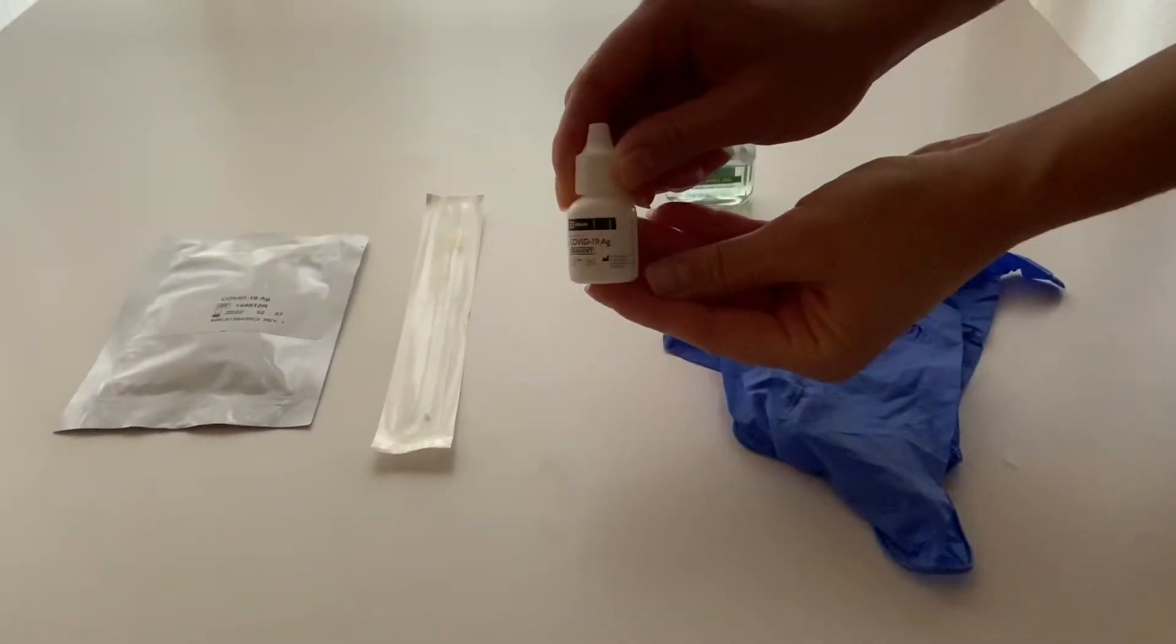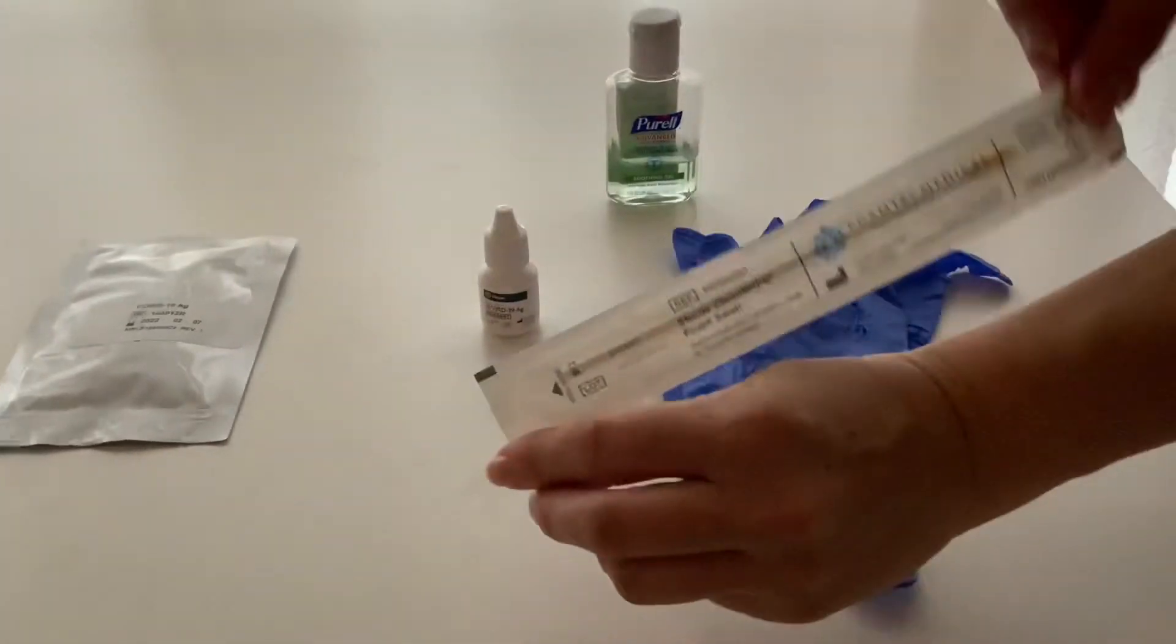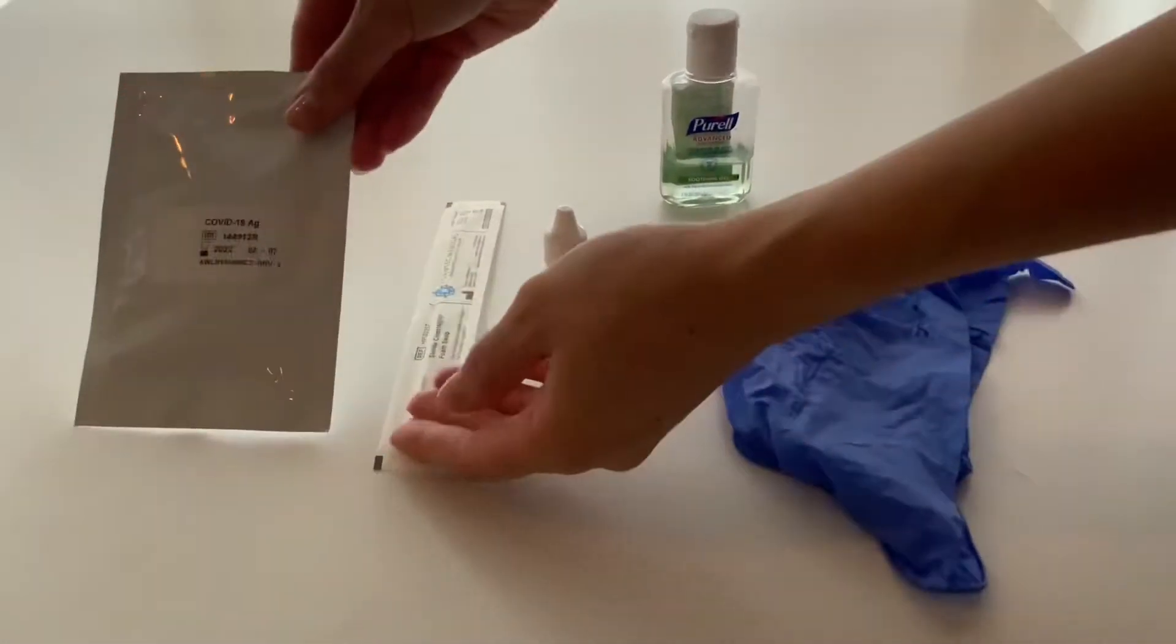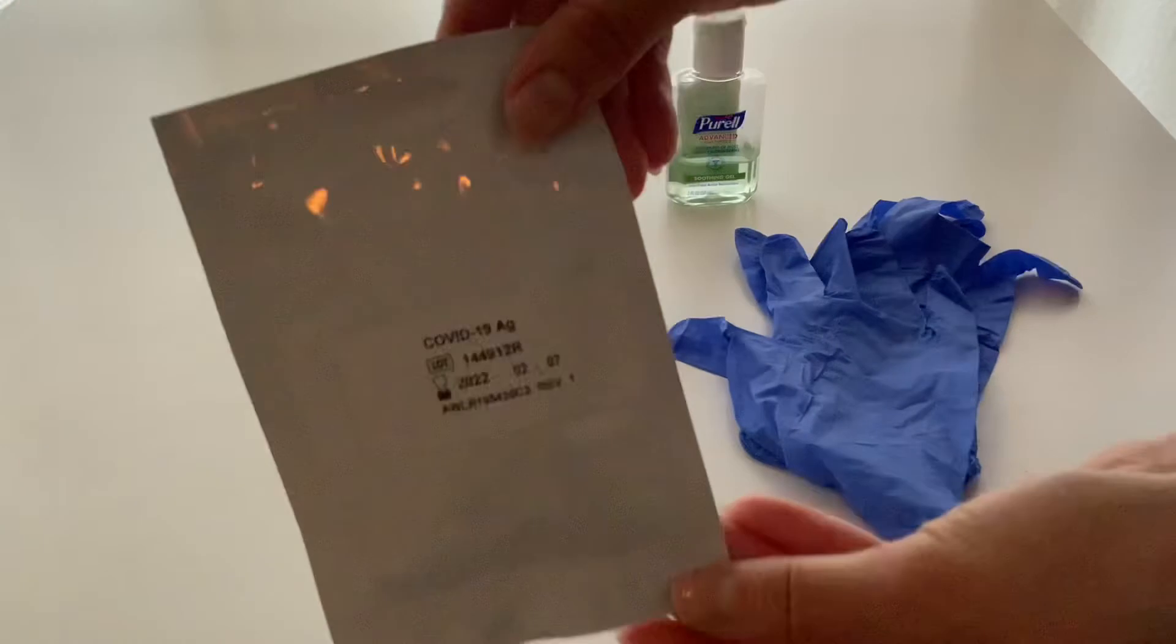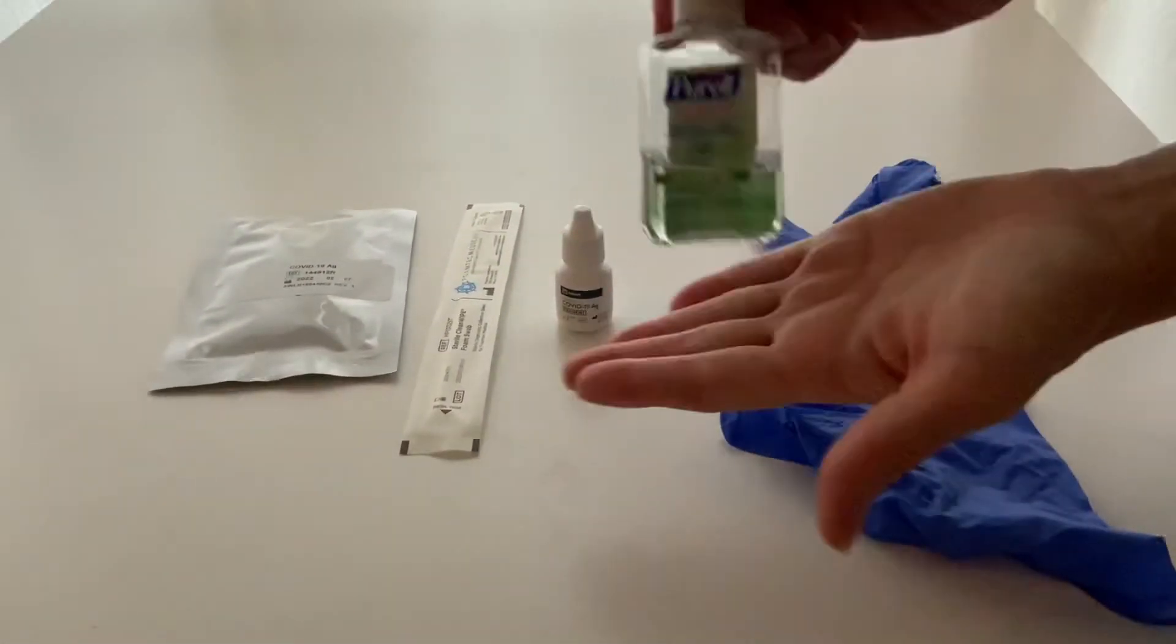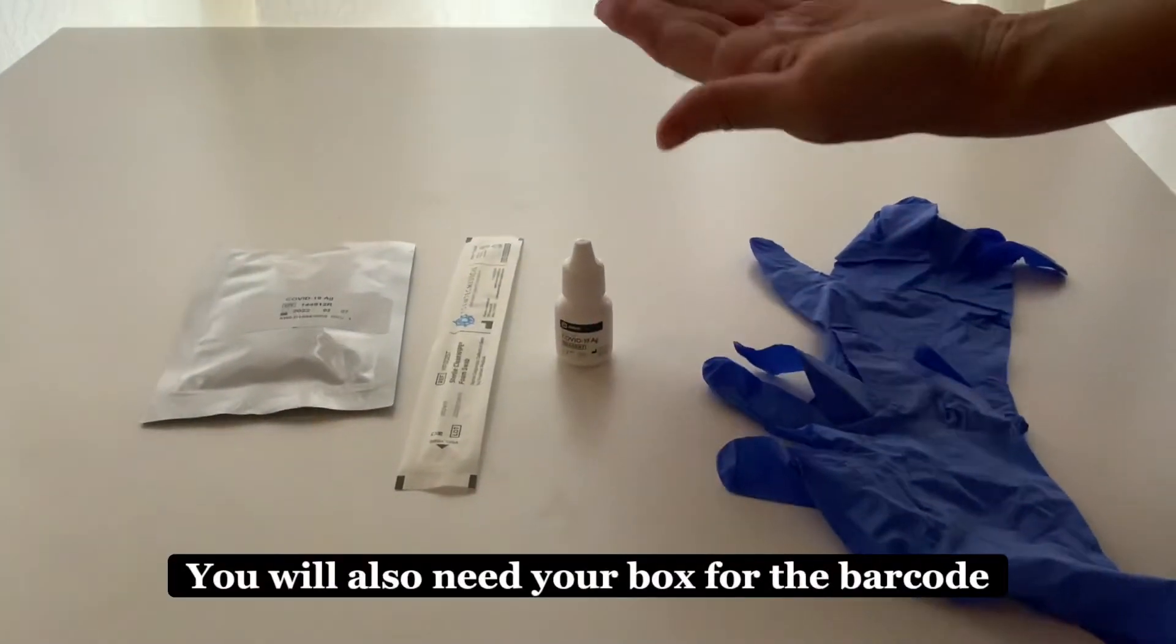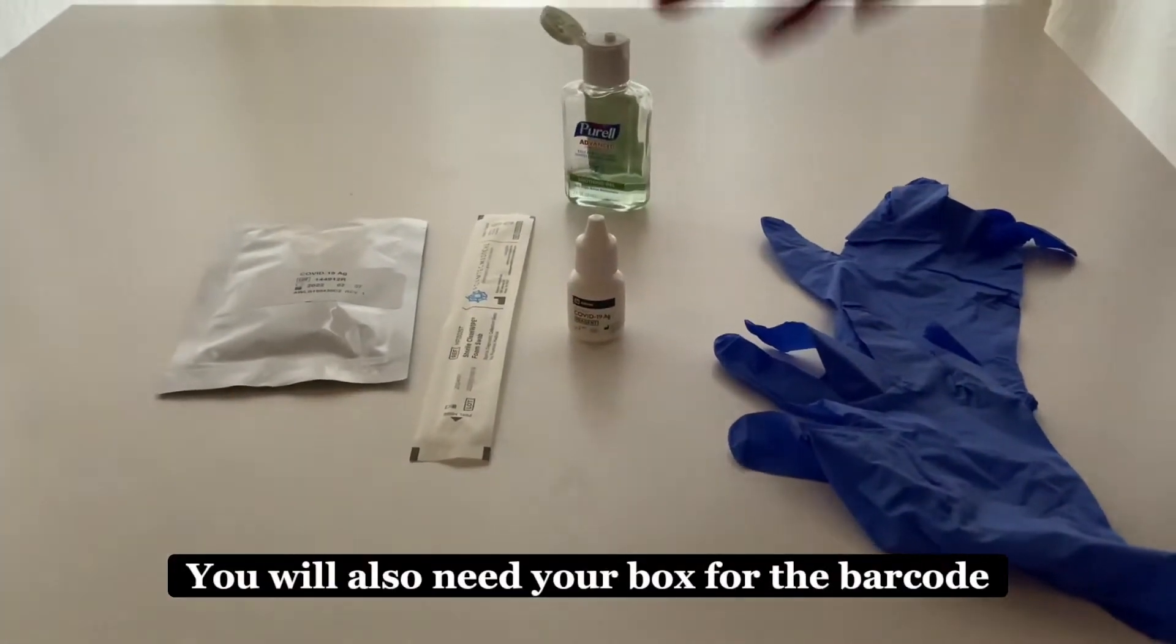These are the supplies you're going to need. You're going to need the solution that comes with it, also the q-tip that's pre-packaged, as well as the COVID-19 card. Don't open this card until you're quite ready to do the test. Also some gloves and some hand sanitizer. You will also need the box for the barcode. Don't forget you're going to need that box.